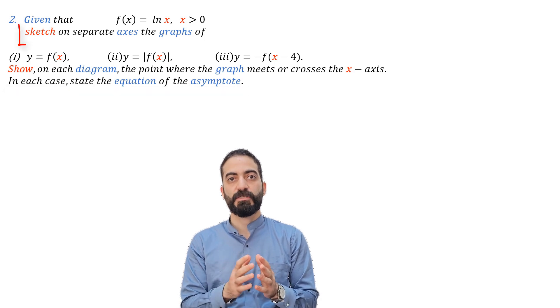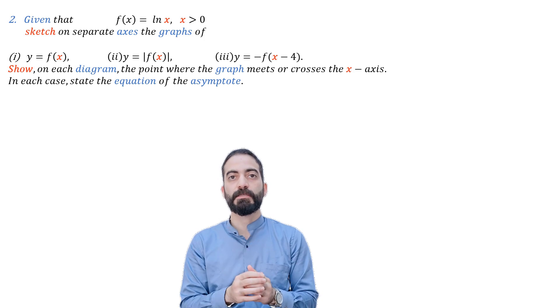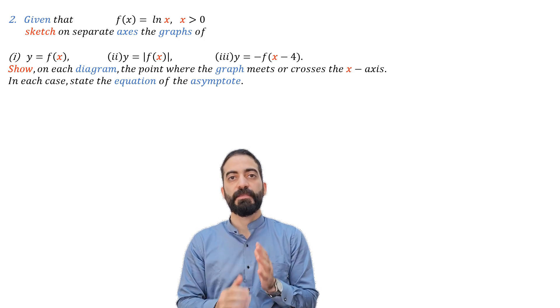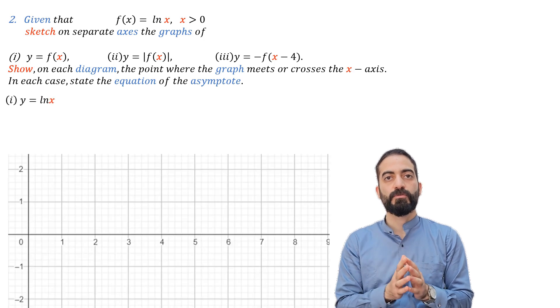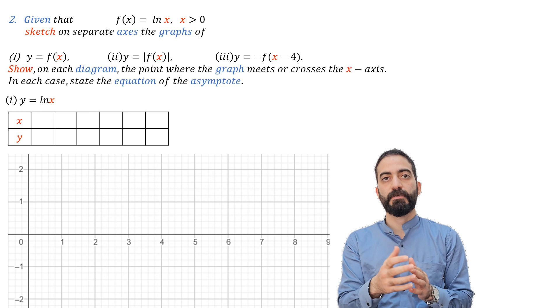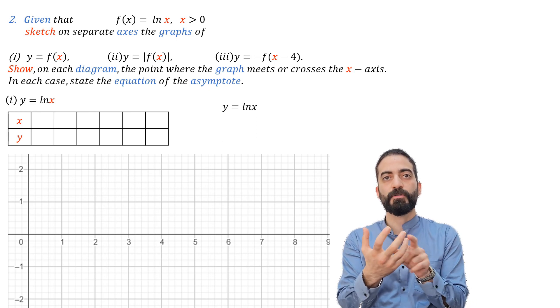As long as the question asks us to sketch, we can specify some points to draw the graph. We start with y equal ln(x). We choose values for x randomly in order to get the answer for y through the calculator.